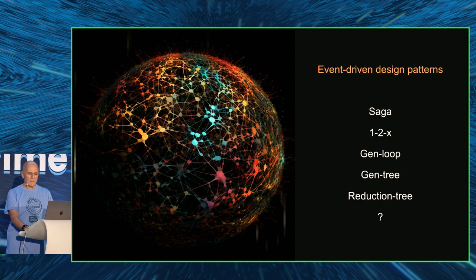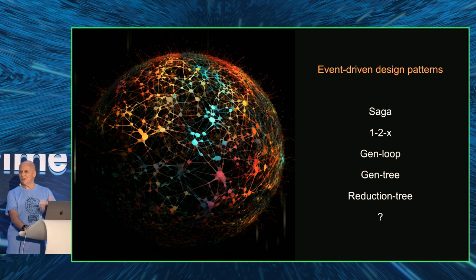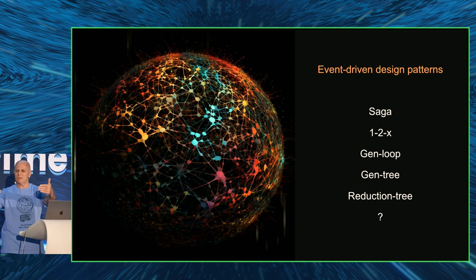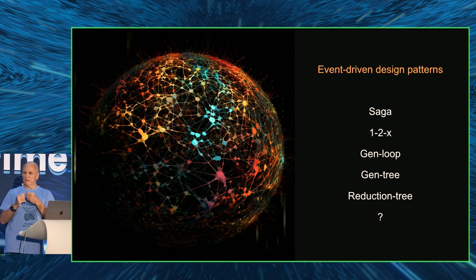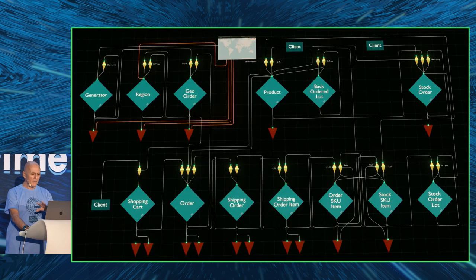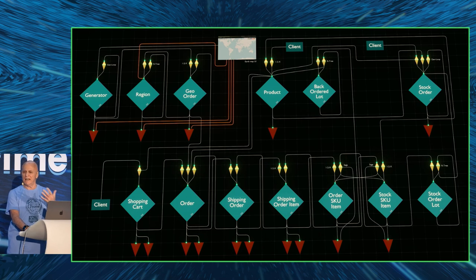These patterns started to emerge — choreographed sagas, generation loops, reduction trees. Reduction trees are really interesting. The first place I ran into one, we wanted to write a proof of concept where we were taking in financial transactions that had to be reduced to merchant payments, coming at a very high rate. We used a reduction tree to handle the reduction of a lot of detailed information — fully auditable, fully restartable, fully distributed — and it would sum up without error into merchant payments. That's a reduction tree. These individual components are relatively simple. The fun part — and this is really for us humans — is the design of these systems. How do you wire things together? You're the designer of the mind here.